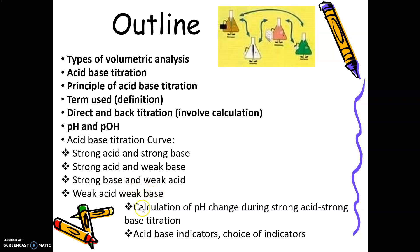Next is calculation of pH change during strong acid versus strong base titration. This focuses on calculation of pH for every stage, acid-base indicators, and the choice of indicators.